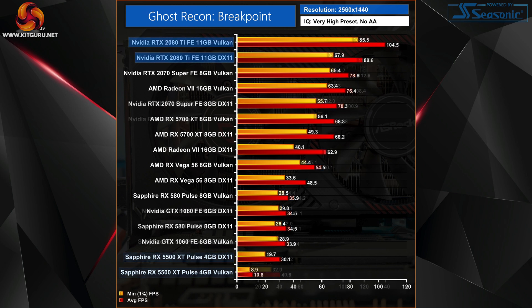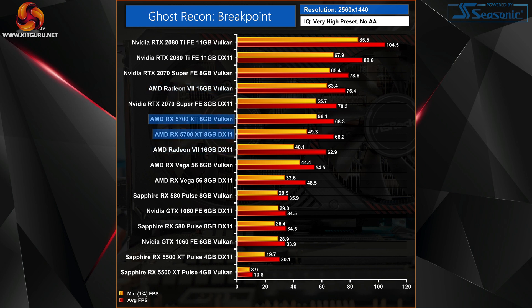Looking at the 1440p results to see if any trends become clearer: the higher-end GPUs still exhibit significant frame rate changes, with average figures improving by 18% for the RTX 2080 Ti. AMD's Radeon VII also improves massively with Vulkan — still 21% faster than DX11. Aside from those two, there is a definite leveling out of performance differences between APIs at 1440p. The RX 5700 XT demonstrates this perfectly: while its one percent lows are improved with Vulkan, there's no difference to average frame rates. The RTX 2070 Super is now 11% faster with Vulkan, down from 20% at 1080p.